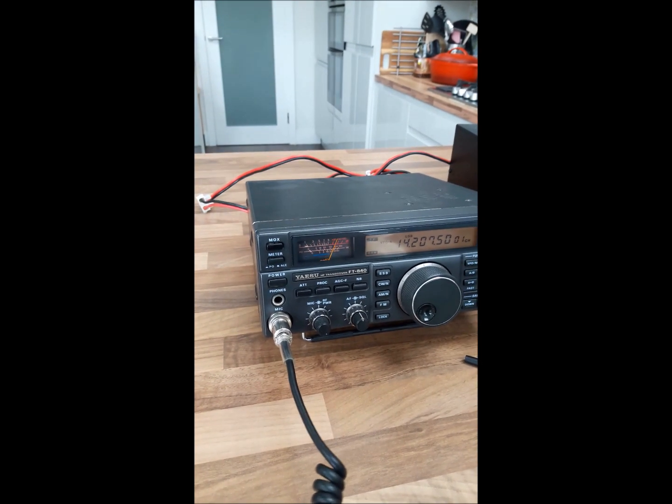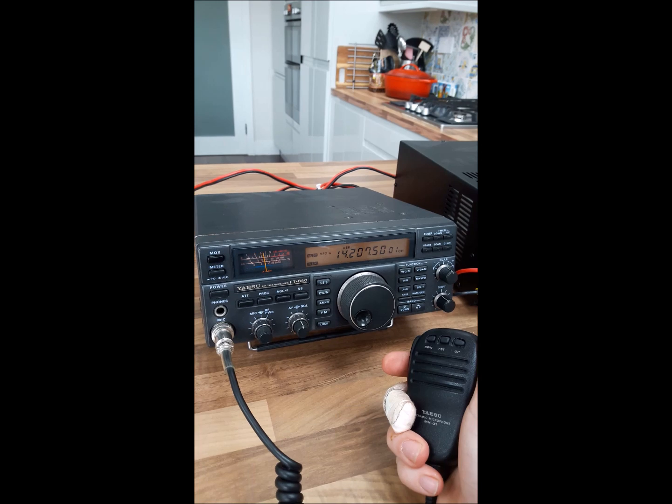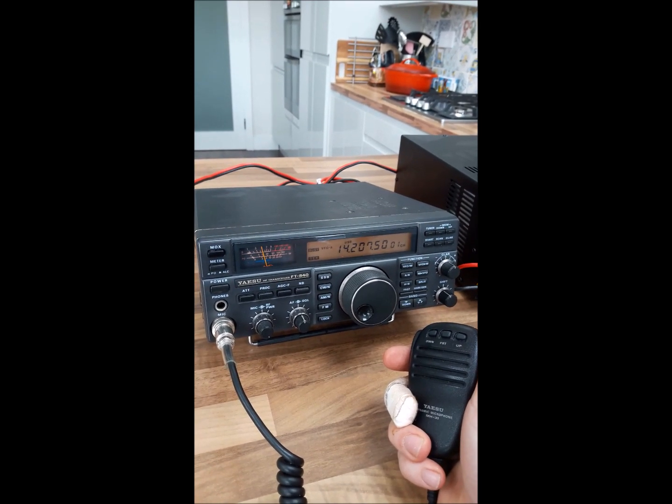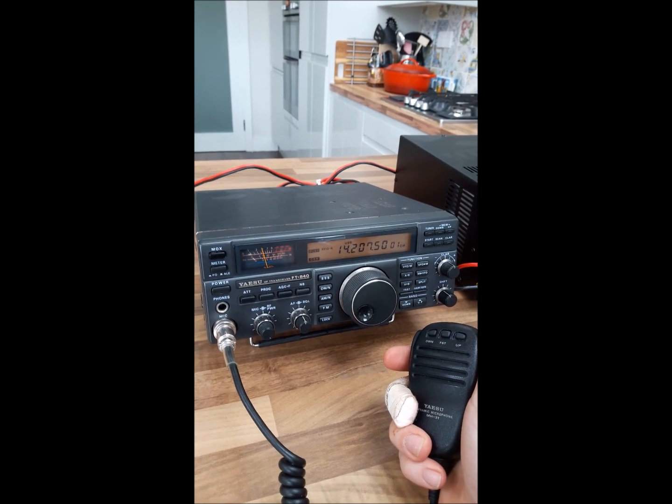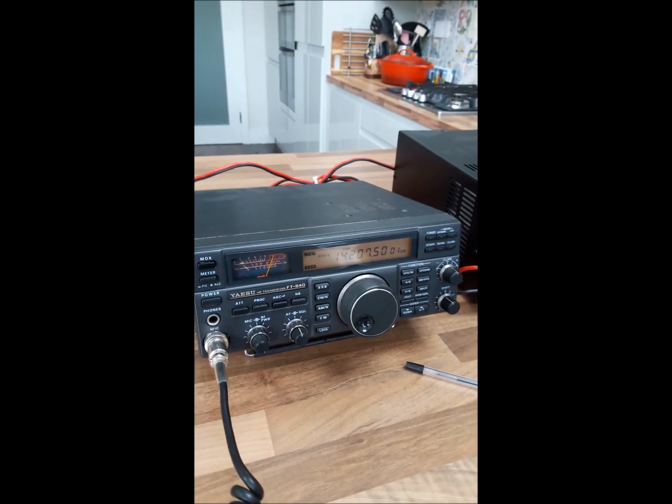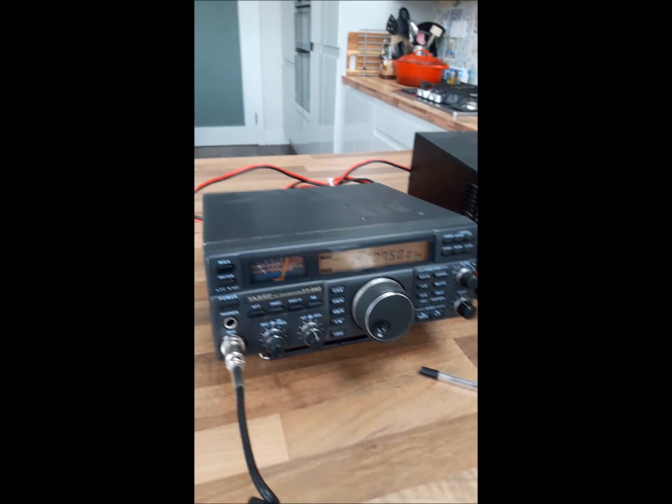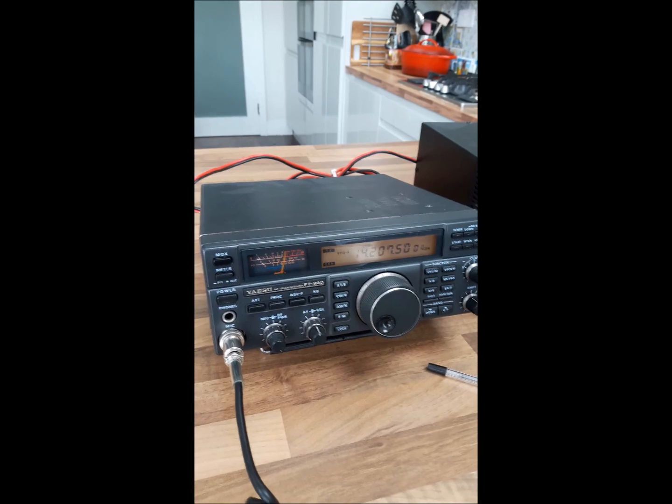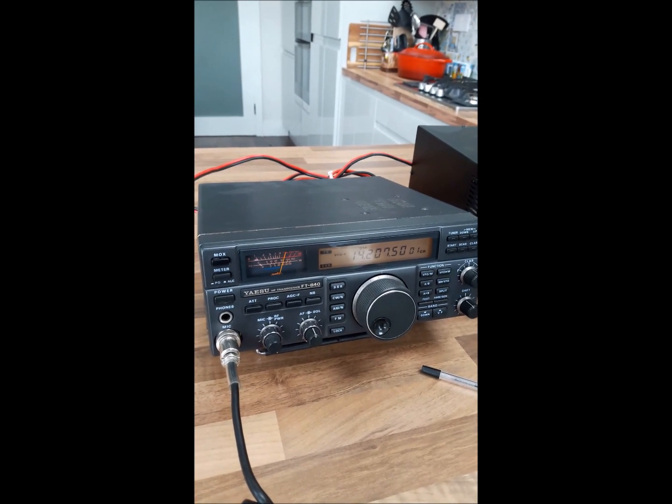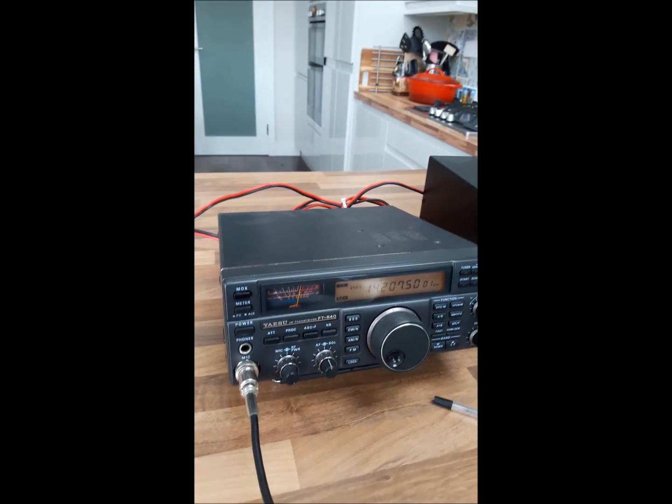Echo India 9 Hotel Alpha Bravo. Echo India 9 Hotel India Bravo. Romeo 5 Echo Charlie from Echo India 9 Hotel Alpha Bravo, Hotel Alpha Bravo. The name here is Adrian, Alpha Delta Romeo India Alpha November. Your signal with me is about a five and seven at the moment. I'm just trying out a new homemade vertical antenna. What's my signal report? Over.